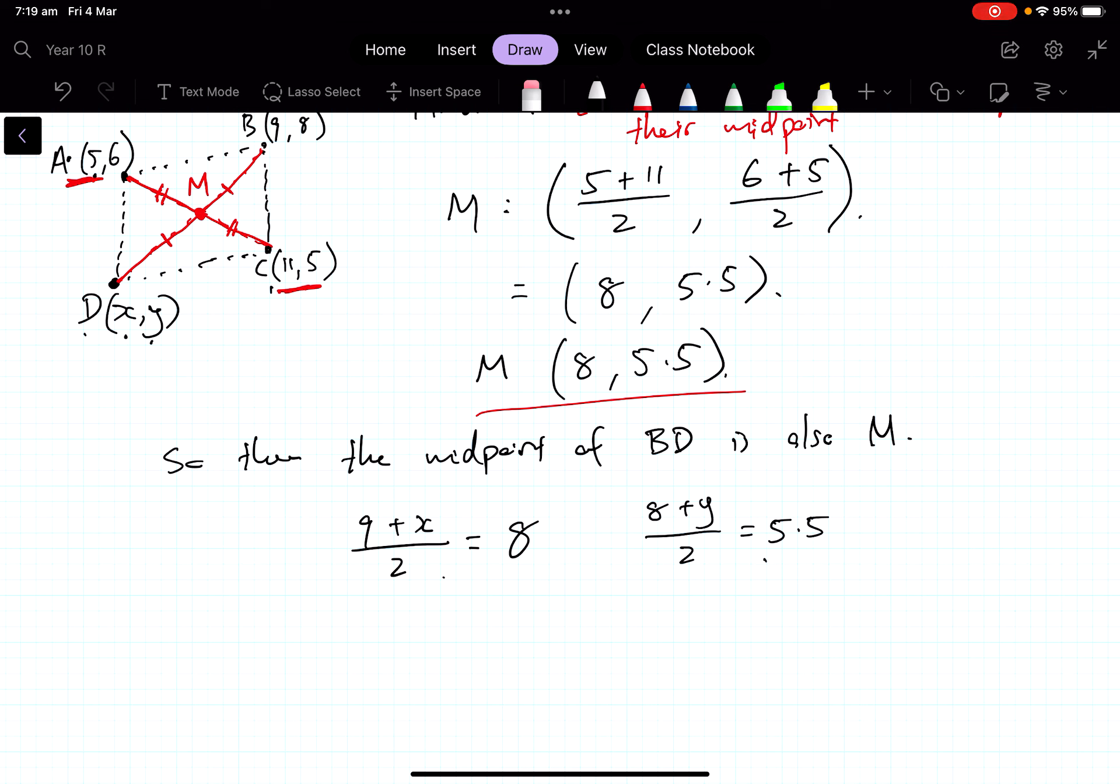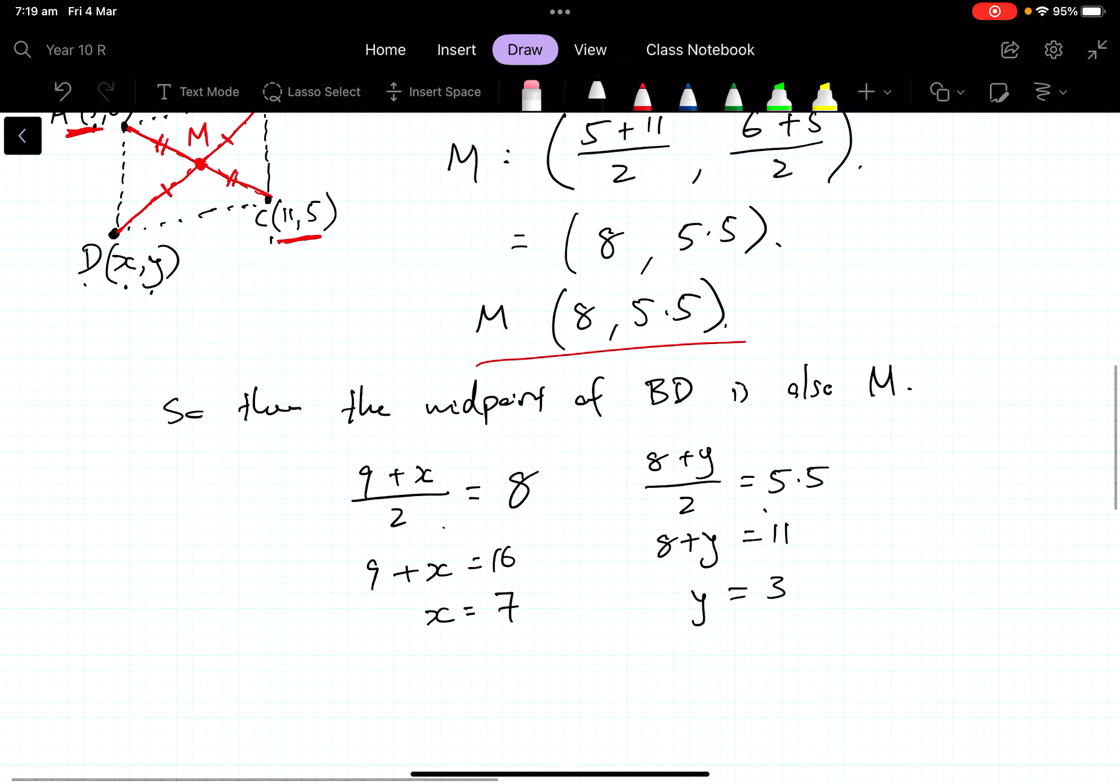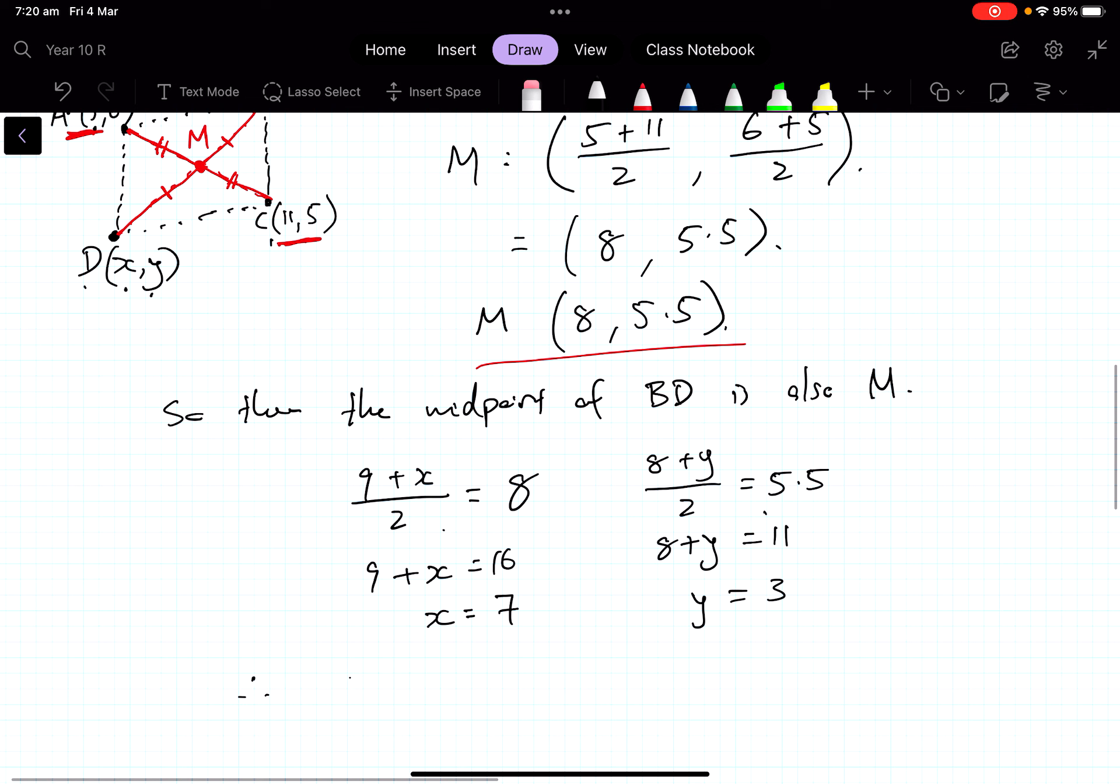What's the answer for x? Well, 9 + something divided by 2 equals 8. You multiply by 2: 9 + x = 16, x equals 7. And then this one's the same: 8 + y, you multiply by 2, 8 + y = 11, y is equal to 3. So therefore D has coordinates D(7, 3) is the fourth vertex.